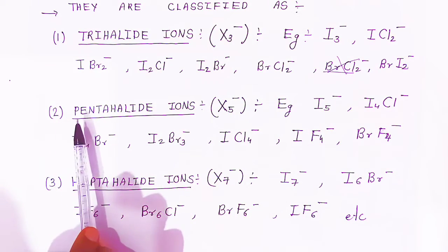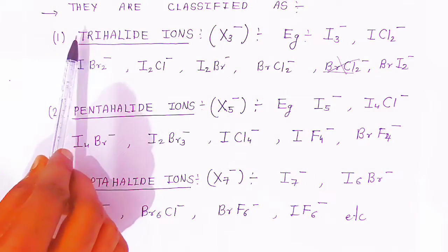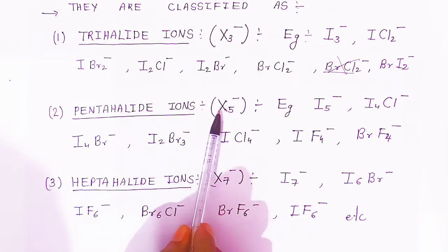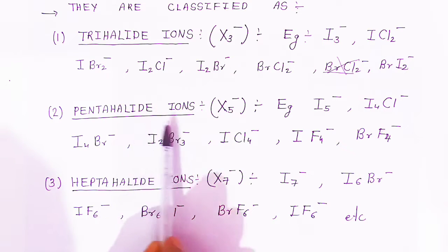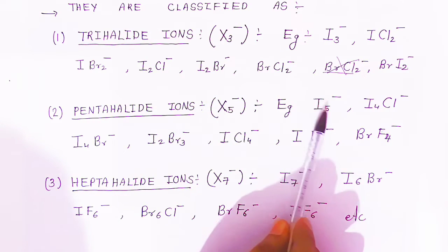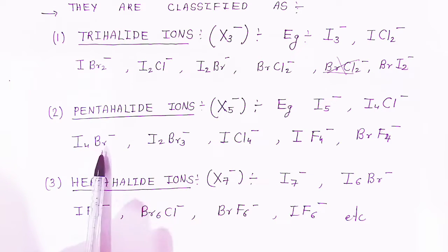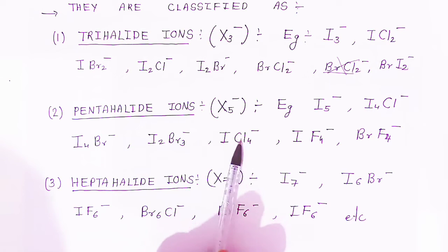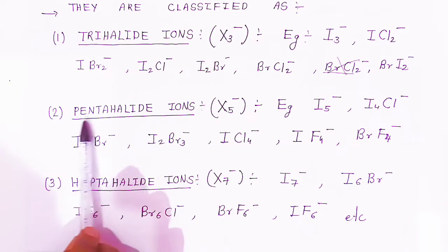The second type is pentahalide ions, where X5- contains five halogen atoms — also an odd number. Examples include I5-, I4Cl-, I4Br-, I2Br3-, ICl4-, IF4-, and BrF4-. The total number of halogen atoms in each case is five.